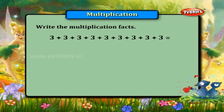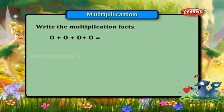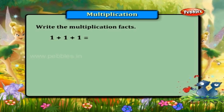Three plus three plus three, three plus three plus three, three plus three plus three is equal to nine into three. Zero plus zero plus zero plus zero is equal to four into zero. One plus one plus one is equal to three into one.